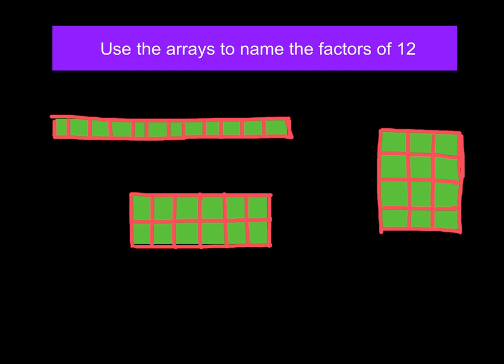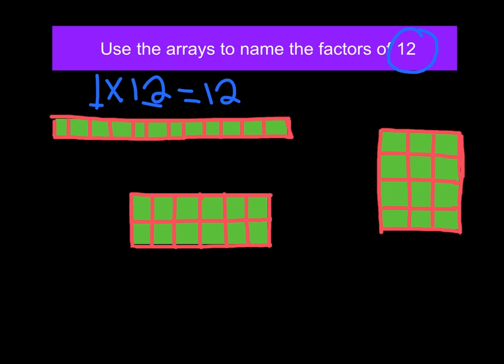Here it says use the arrays to name the factors of 12. Let me look at the first array. I have 1 row, so I know my first factor is going to be 1. Counting how many are in that row — 12. Remember that rule that tells me 1 and the number itself are always going to be factors. So 1 times 12 makes 12. Let me look at my next array — I have 2 rows, so my first factor is going to be 2.